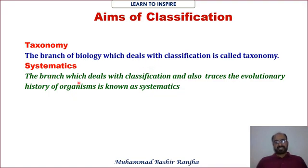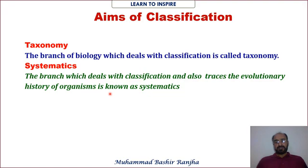Systematics involves not only classifying organisms but also tracing the evolutionary history of those organisms — meaning which ancestors they came from, and those ancestors' ancestors, ultimately tracing back to the prokaryotes, which were the first living organisms on Earth.